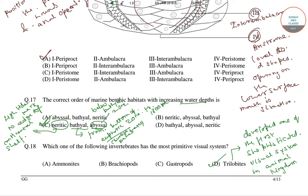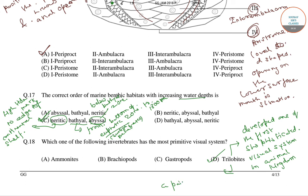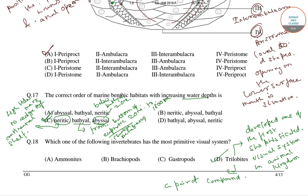The majority of trilobites have a pair of compound eyes that are made up of many lensed units. So among the listed invertebrates, trilobites have the most primitive visual system, having developed one of the first sophisticated visual systems in the animal kingdom.